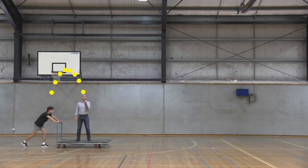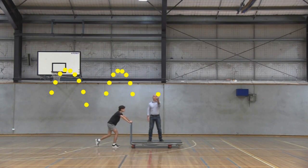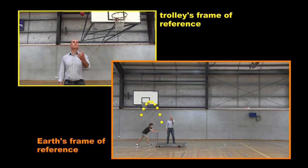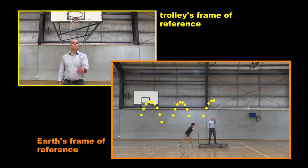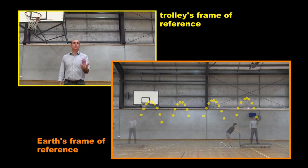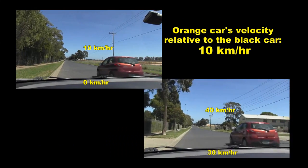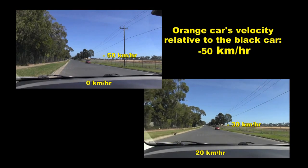Relative Motion is the brilliant third program in the Shedding Light on Motion series of educational science videos. Using clear, real-life examples and superb animations,